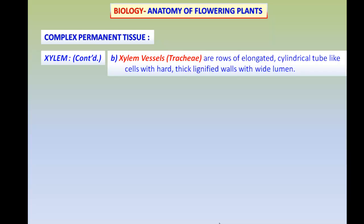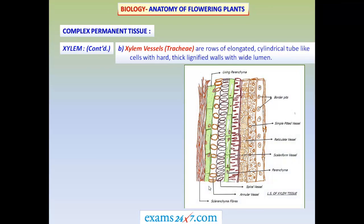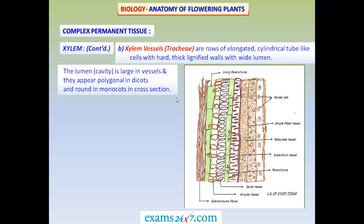Vessels, which are also conducting tissues, are elongated and derived from many cells placed one above the other. These cylindrical cells have an open passage called the lumen. They also have thickening similar to tracheids, due to lignification of their walls. The lumen of large vessels is very broad, appearing polygonal in dicots and round in monocots.